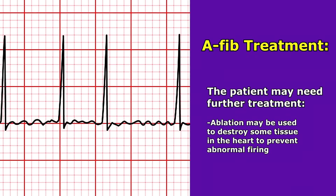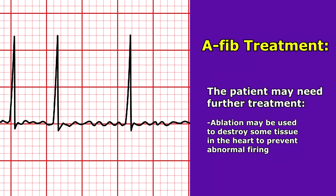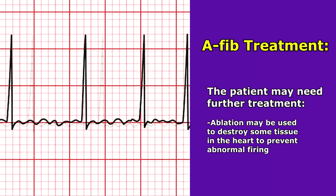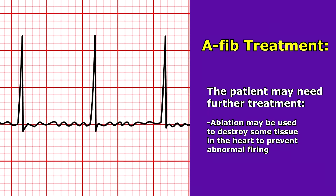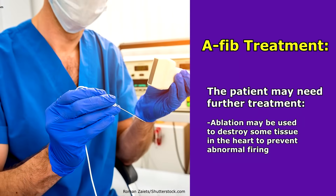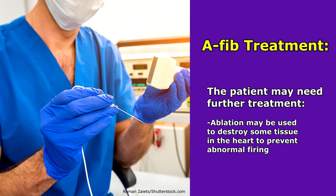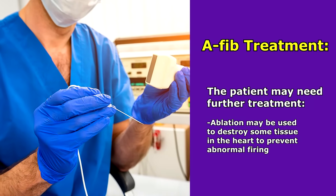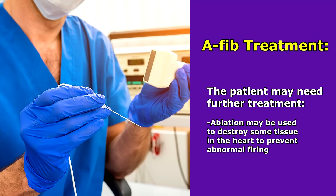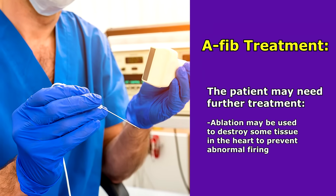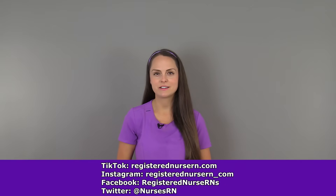Sometimes the patient needs further treatment because medications just don't work very well and the patient continues to go into atrial fibrillation. In that case, they may consider doing an ablation — a procedure that ablates, meaning destroys or erodes, some of the tissue in the heart to prevent it from abnormally firing in the future. That wraps up this video on AFib. If you'd like to watch more videos in this ECG series, you can access the link in the YouTube description below.